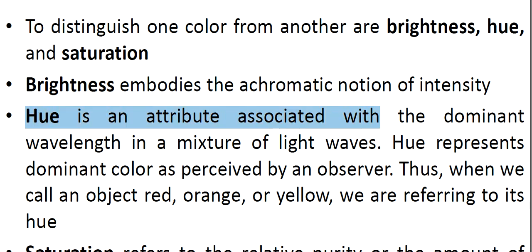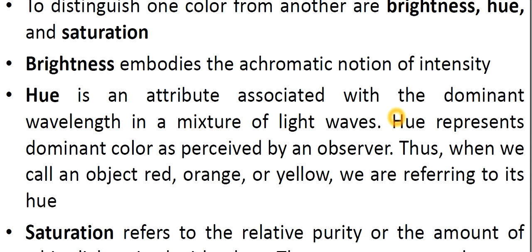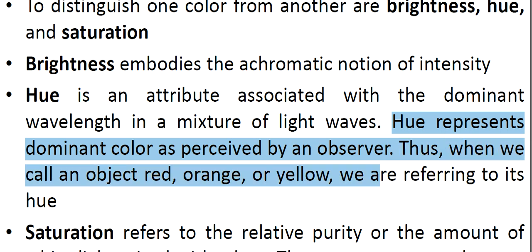Then hue. Hue is an attribute associated with the dominant wavelength in a mixture of light waves. Hue represents dominant color as perceived by an observer. Thus, when we call an object red, orange, or yellow, we are referring to its actually hue. Suppose I have to say that that ball is red, this means I'm actually talking about its hue.